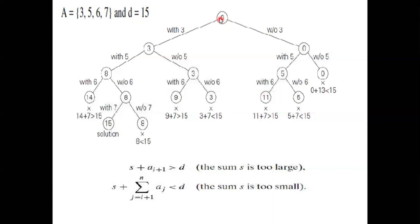The initial value is zero at the root. We are going with 3, meaning we are adding 3 — that is zero plus 3 equals 3. If we are adding 3, we also have to consider without 3: without 3 the value is zero since we are not considering 3. Next, with 3, the next number is 5. Width to 5 means 5 plus 3 — the answer is 8.